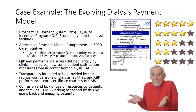Just to give you an example from the dialysis world. Several years before we were using the phrase alternative payment model, the Medicare reimbursement for dialysis for people that have kidney failure is really an alternative payment model that started in January of 2011. Looking back at the LAN map, the payment system for dialysis is really an alternative payment model, category two. It is a fee-for-service payment per treatment for dialysis session, and that payment is adjusted by quality measures, and it is downward adjusted.